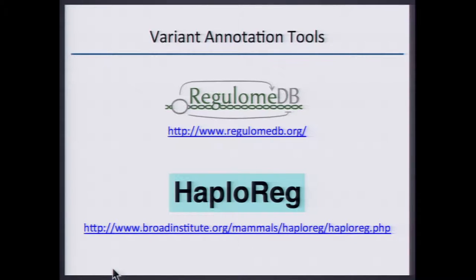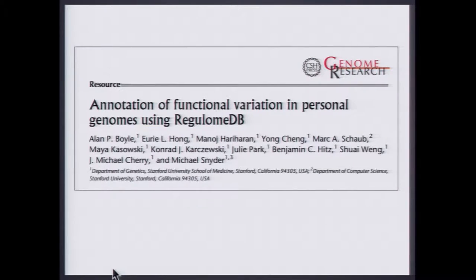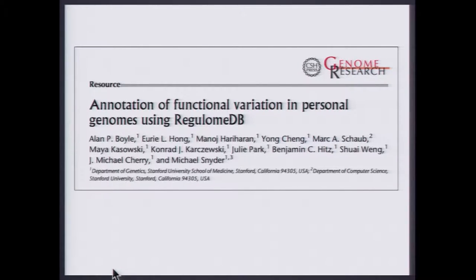There are two tools. We have RegulumDB and HaploReg. Starting first with RegulumDB, this is from Mike Cherry and Mike Snyder's labs. What's great about this tool is it takes all sorts of data from ENCODE, Roadmap, and other databases and essentially distills it down to assigning each variant a score — how likely is this variant to alter transcription factor binding.